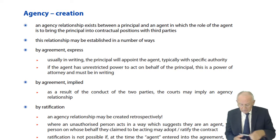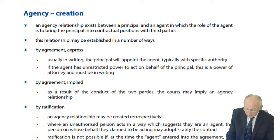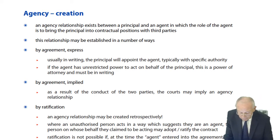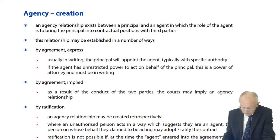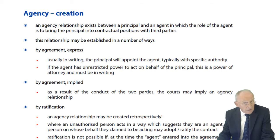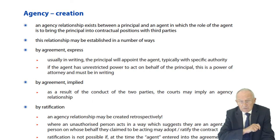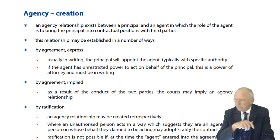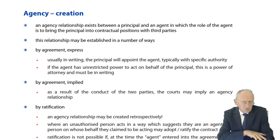An agency relationship exists between a principal and an agent, in which the role of the agent is to bring the principal into contractual positions with third parties. The notes assume the principal is a company and the agent is a director, but it doesn't have to be that. A partner is an agent of the firm and the other partners. A director is the agent of the company. All sorts of people can be agents of others.